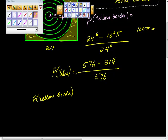What is 576 minus this? Equals 262 over 576. What is 262 divided by 576?